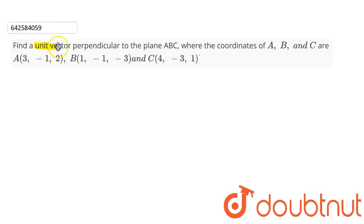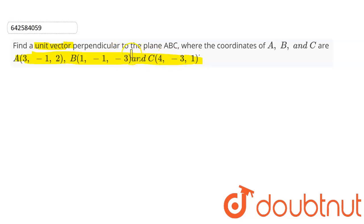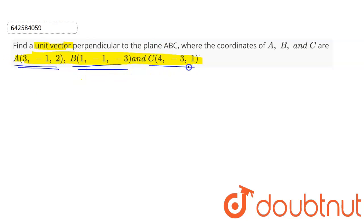Here we have to find the unit vector perpendicular to the plane ABC, where the coordinates of A, B, and C are given. We will be finding the cross product of vector AB and vector AC, which will give a vector that is perpendicular to the plane ABC.